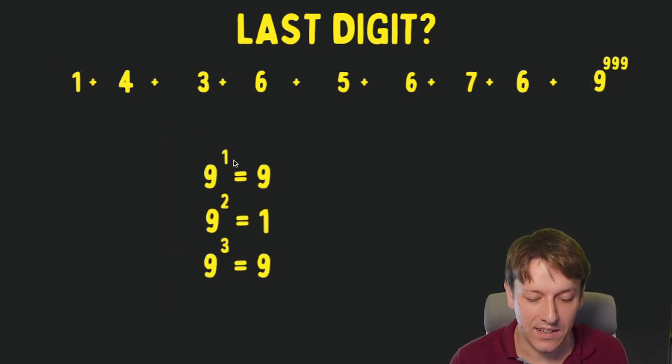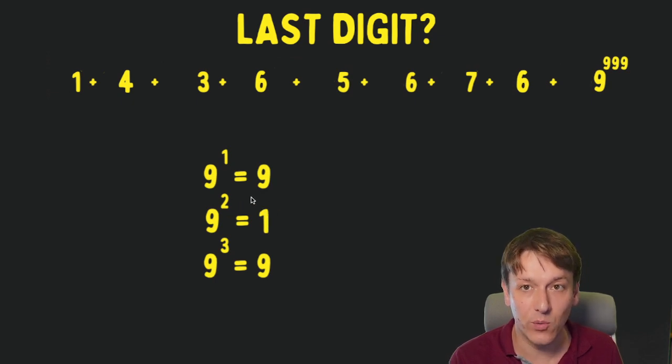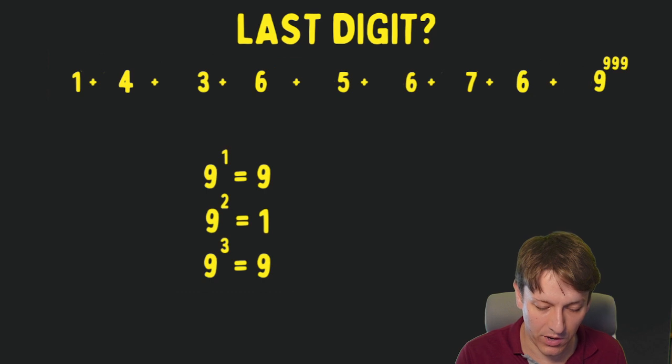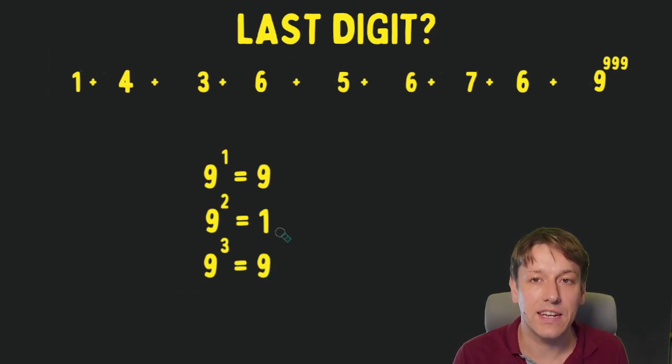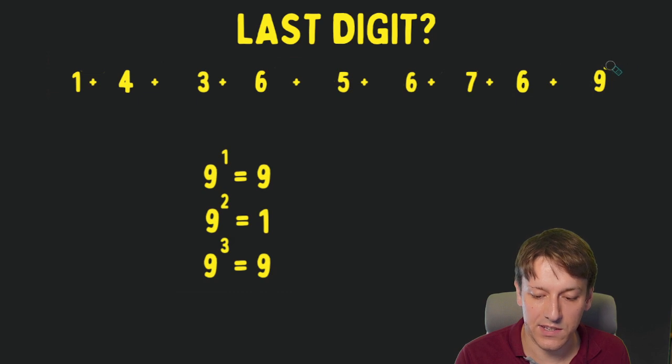And the powers of 9 go 9 times 9 is 81, take the 1 multiplied by 9 to get 9, that one just repeats every other one, so any odd power has last digit 9, any even power has last digit 1. 999 is odd, so this one has last digit 9.